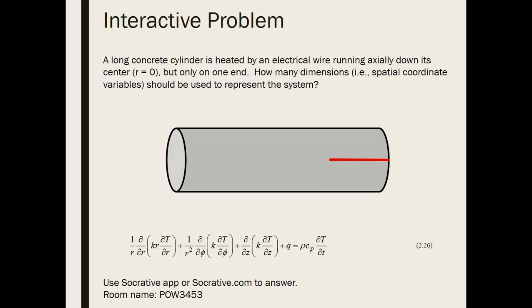Here is a thought problem. When using the heat equation you typically start with the full rigorous form — shown here for cylindrical coordinates — and then make simplifying assumptions. In this case, a long concrete cylinder is heated by an electrical wire running axially down its center, but the wire only runs along one end. How many spatial coordinate variables should be used to represent this system?